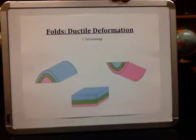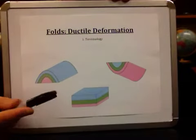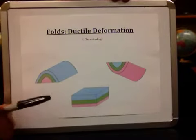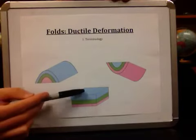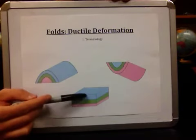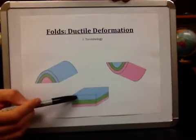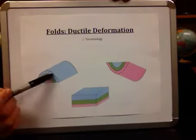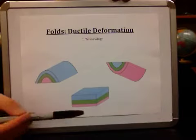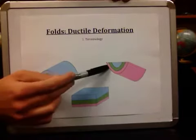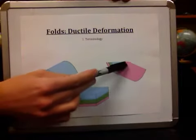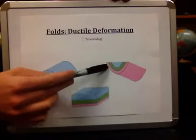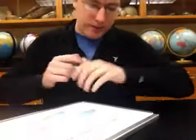The first thing is what we call each of these folds. We start with undeformed rock, squeeze it from the sides — it can make the arch shape, which we call an anticline, or the trough shape, which we call a syncline.